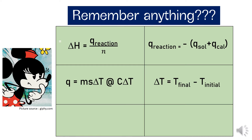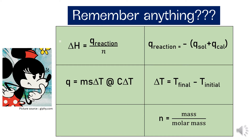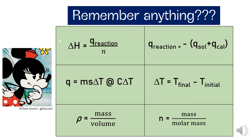From the delta H equation, you need to know N, the number of moles, where N equals mass over molar mass. Sometimes you will need to find the mass of the solution when given the volume. You need the density, where density equals mass over volume. Rearranging, mass equals density times volume.